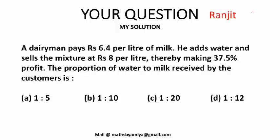Question is, a dairyman pays Rs. 6.4 per litre of milk. He adds water and sells the mixture at Rs. 8 per litre, thereby making 37.5% profit. The proportion of water to milk received by the customer is what?